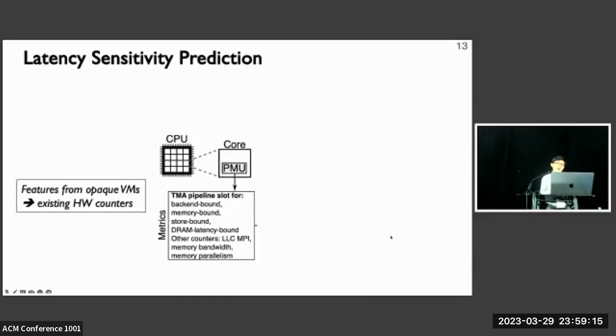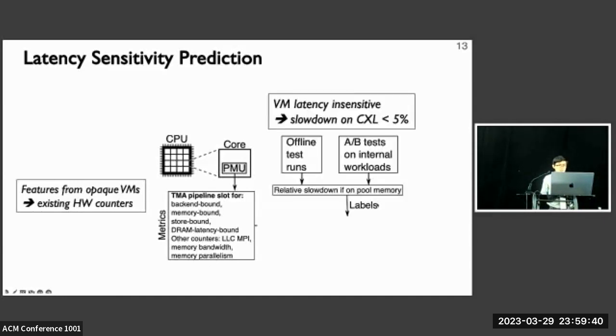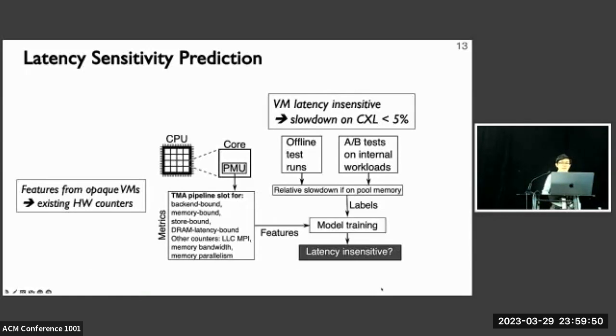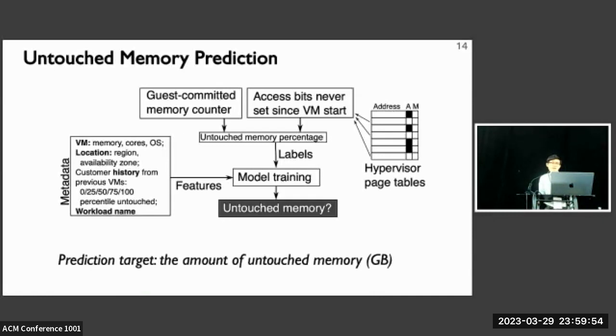Our latency-sensitive model consumes CPU performance counters and some other low-level telemetry data as the input. The slowdown of the pool memory relative to NUMA local case are used as the labels during offline testing phase. Given the per-core hardware counters and the slowdown numbers, we use a decision-tree-based supervised learning model for latency-sensitive prediction. We're using XGBoost. It's similar for the untouched memory prediction, but here the prediction target is to try to predict the amount of untouched memory we need to allocate for zNUMA cases. The result is in terms of the number of gigabytes we want to allocate from the pool.